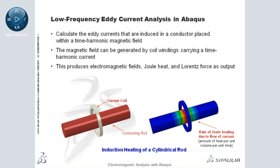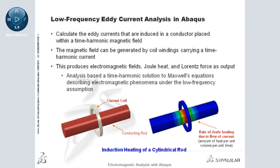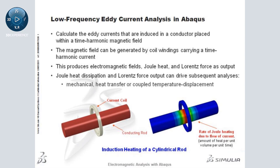The consequence is joule heat dissipation and Lorentz force on the conducting rod. The solution procedure is based on obtaining a time-harmonic solution to Maxwell's equations describing electromagnetic phenomena under the low-frequency assumption, and hence it accounts for strong coupling between the electric and magnetic fields. The joule heat dissipation and Lorentz force output can be used to drive subsequent mechanical, heat transfer, or coupled temperature-displacement analyses.